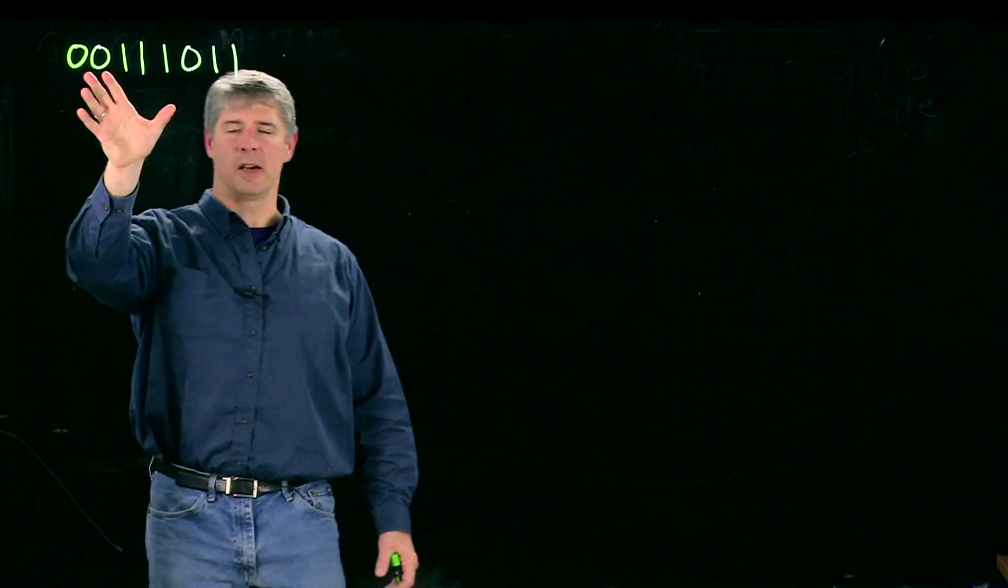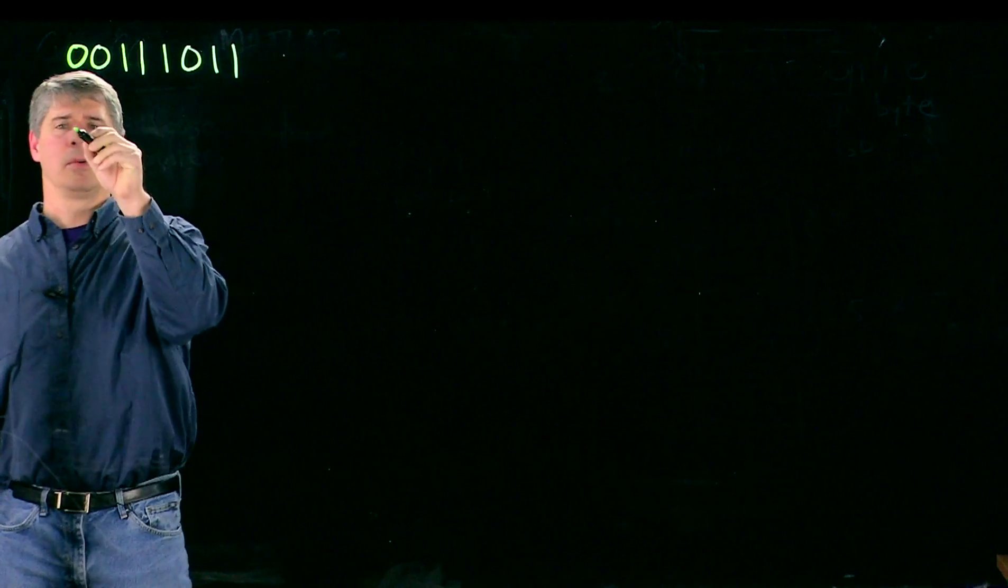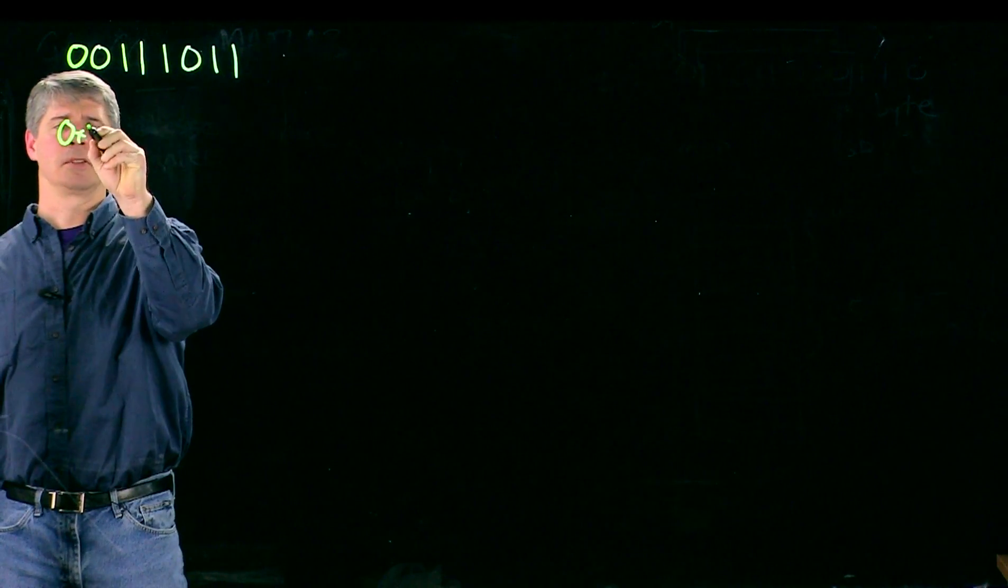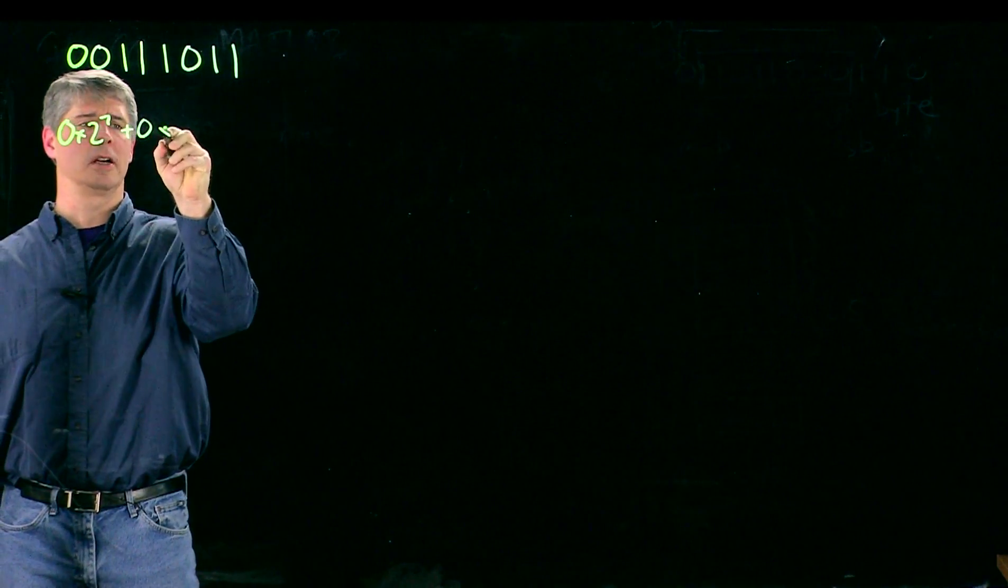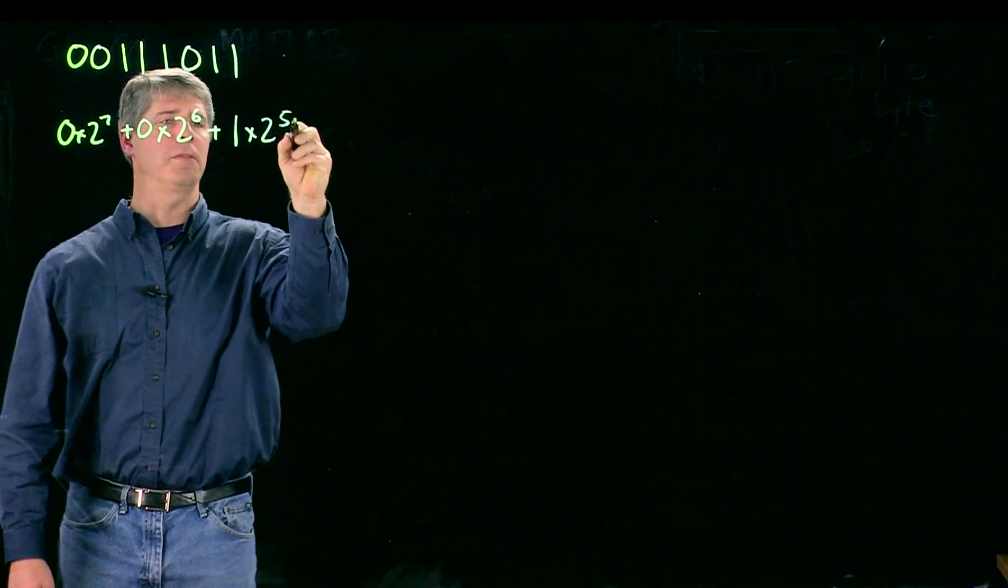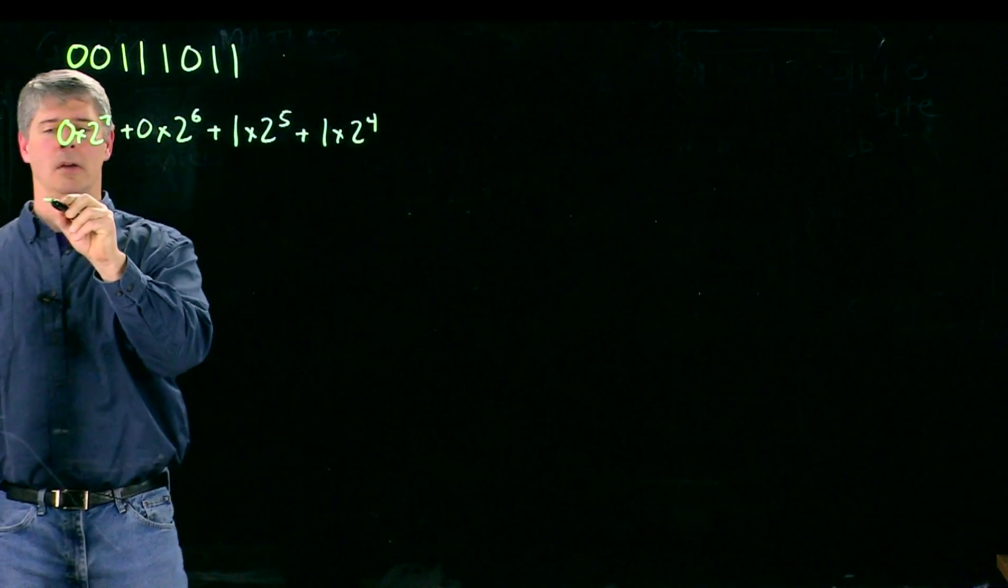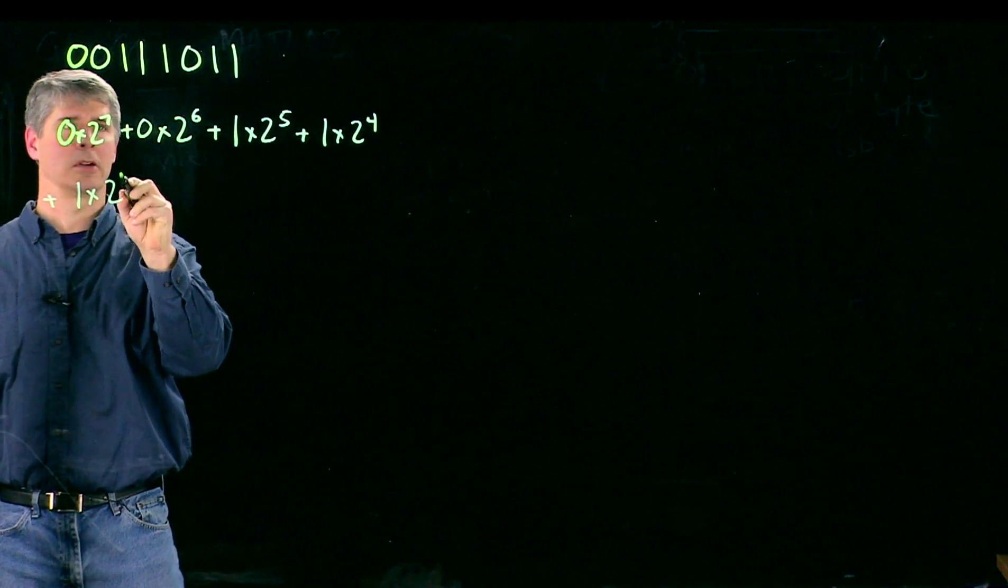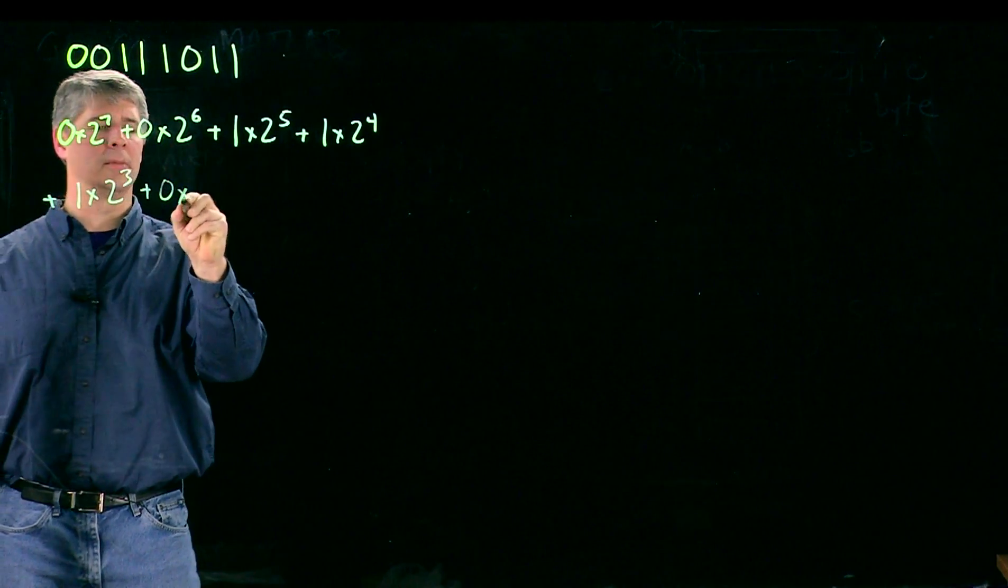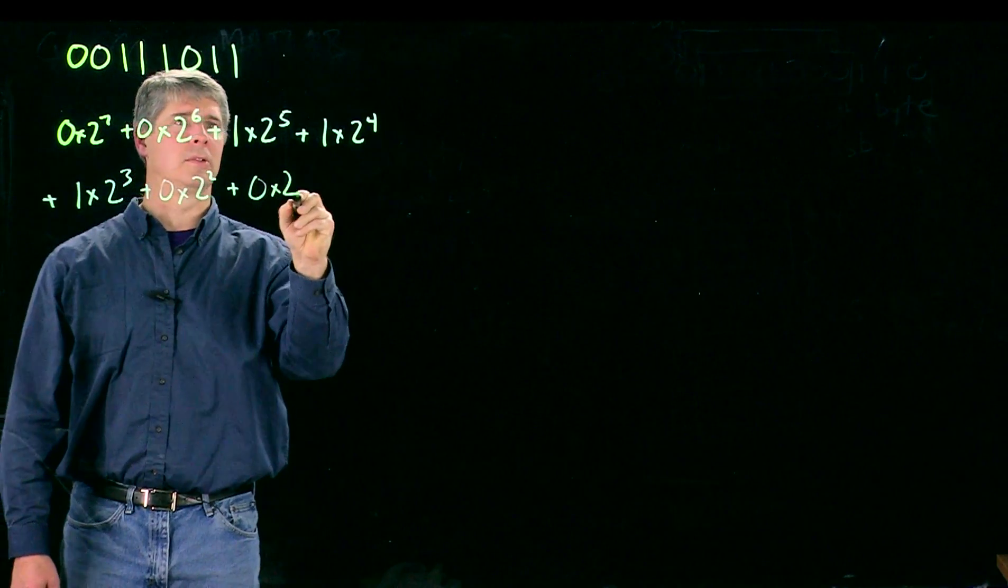So we can take this number here and think of it as - this is one byte, eight bits - we can think of it as zero times 2^7 plus zero times 2^6 plus one times 2^5 plus one times 2^4 plus one times 2^3 plus zero times 2^2 plus zero times 2^1.